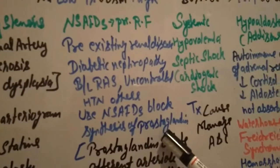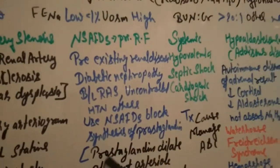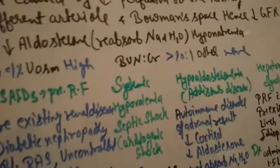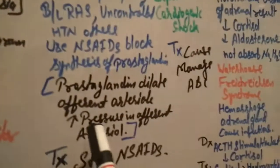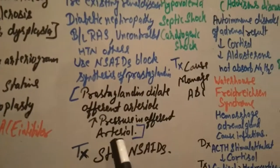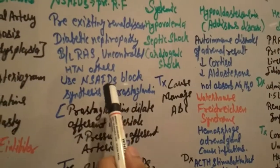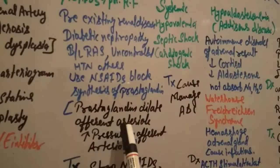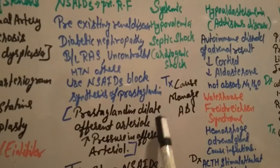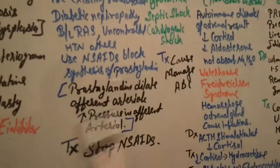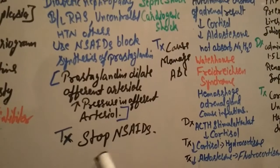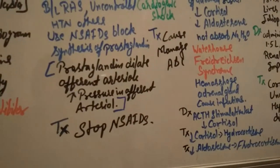NSAIDs work to block the synthesis of prostaglandin. And what is the work of prostaglandin? Prostaglandin dilates the afferent arterioles and increases the pressure in afferent arterioles. But if we give NSAIDs, it blocks prostaglandin so there is constriction of the arterioles and pressure decreases which causes pre-renal failure. How to treat? Stop NSAIDs.